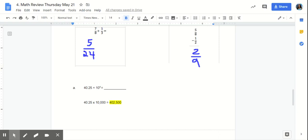And we know that if we move the decimal point four place values to the right because we're multiplying, we're going to get our answer. And the correct answer is 402,500.